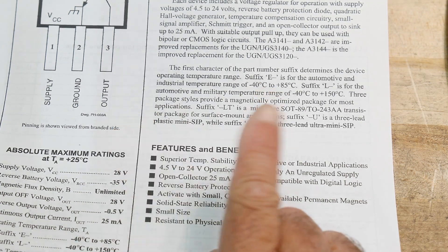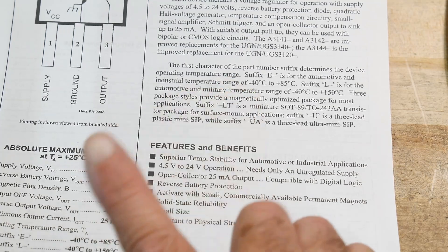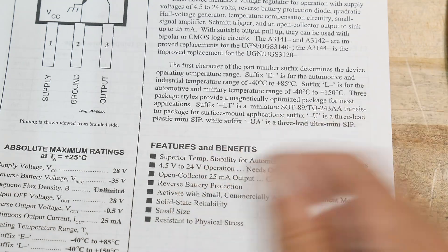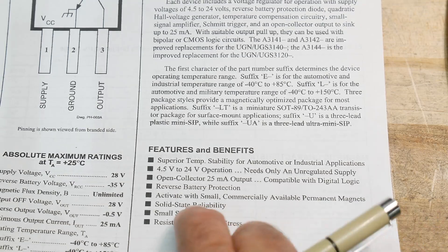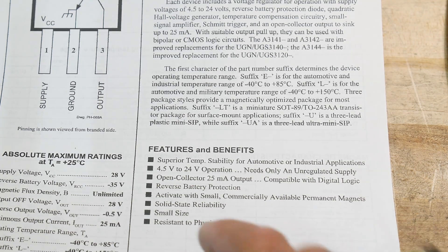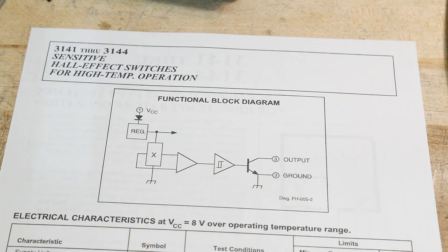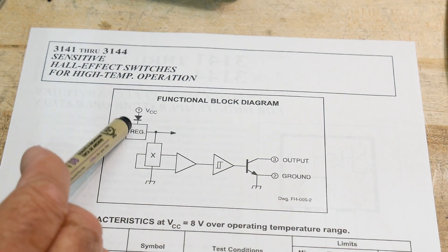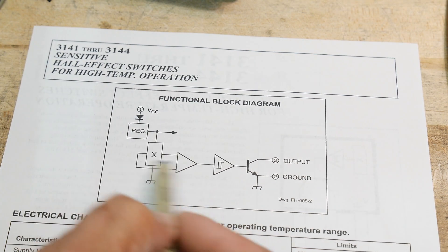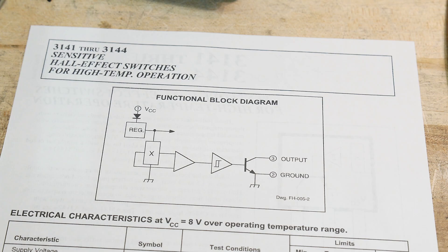Solid state reliability. A lot of times these are used as limit switches, so you could use an actual mechanical switch, like my CNC router has mechanical switches for the limits. But they're prone to failure because they're mechanical. So solid state reliability, small size, and resistant to physical stress. So here's just another diagram. There's actually a diode here into the voltage regulator.